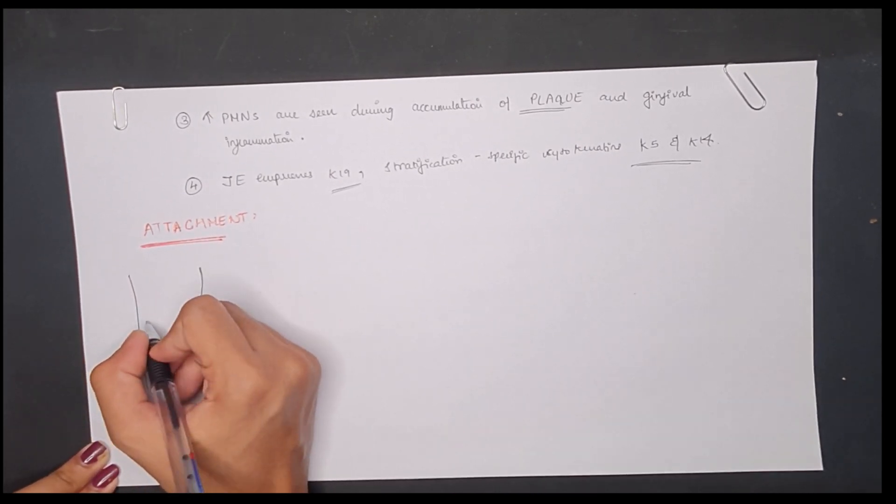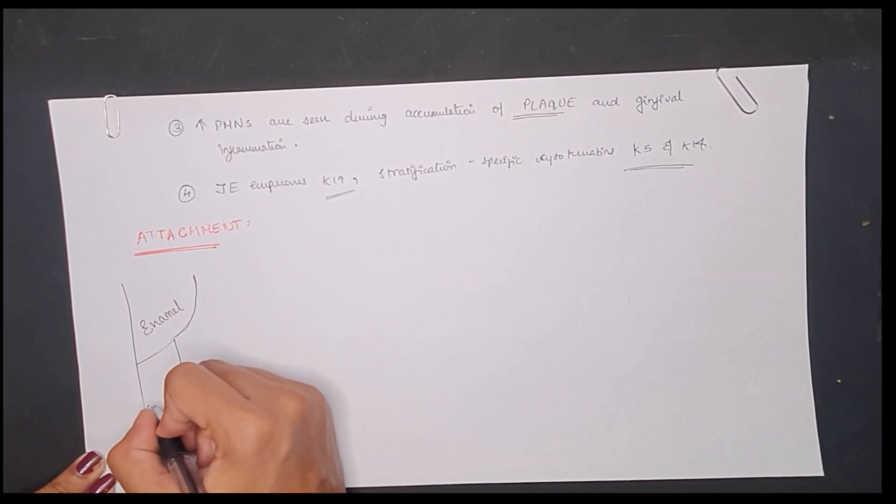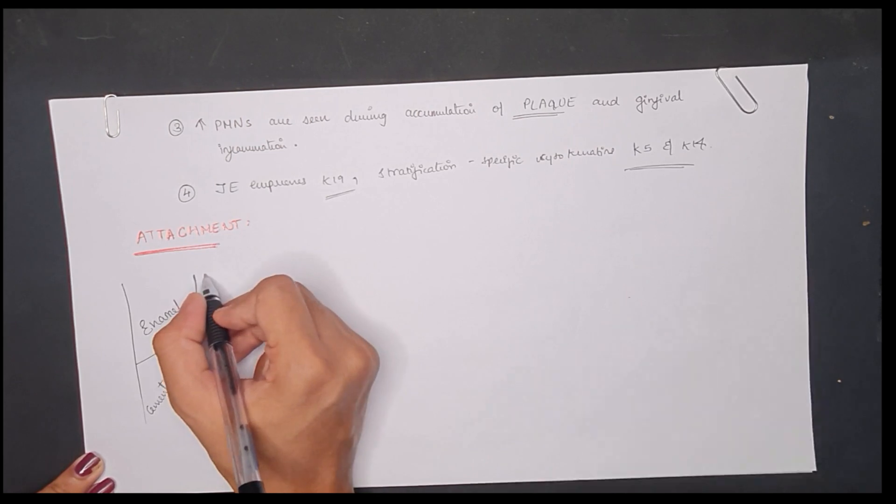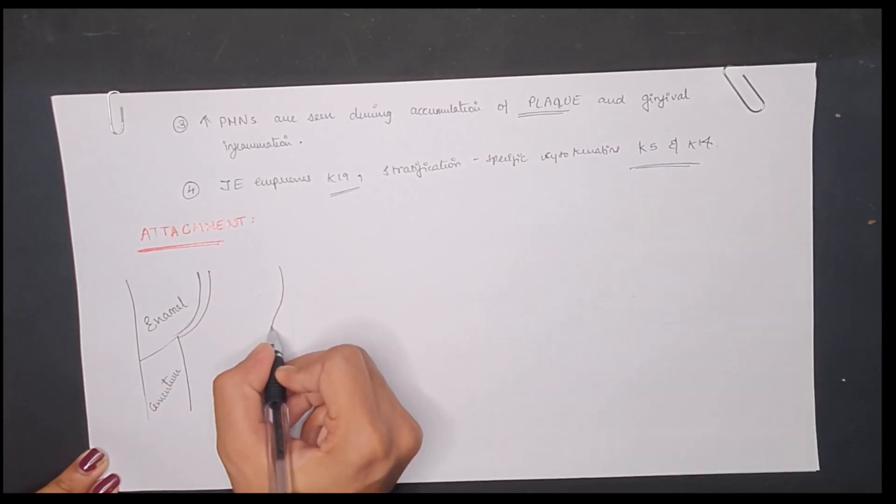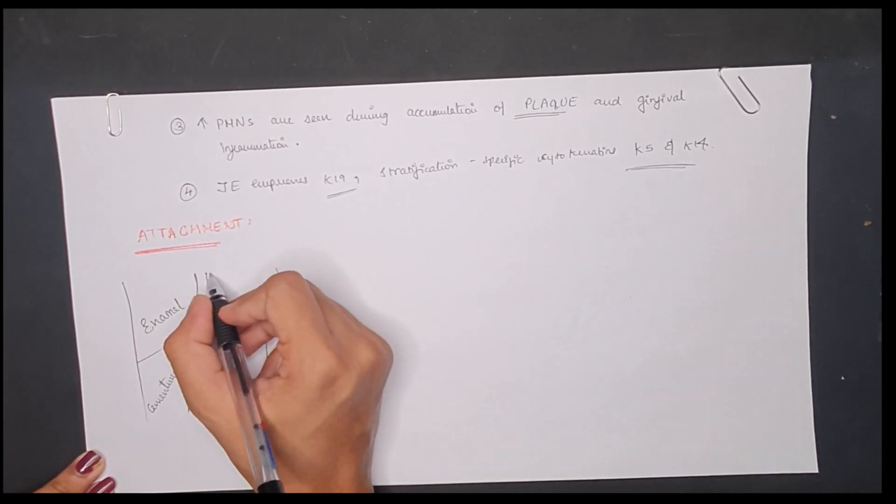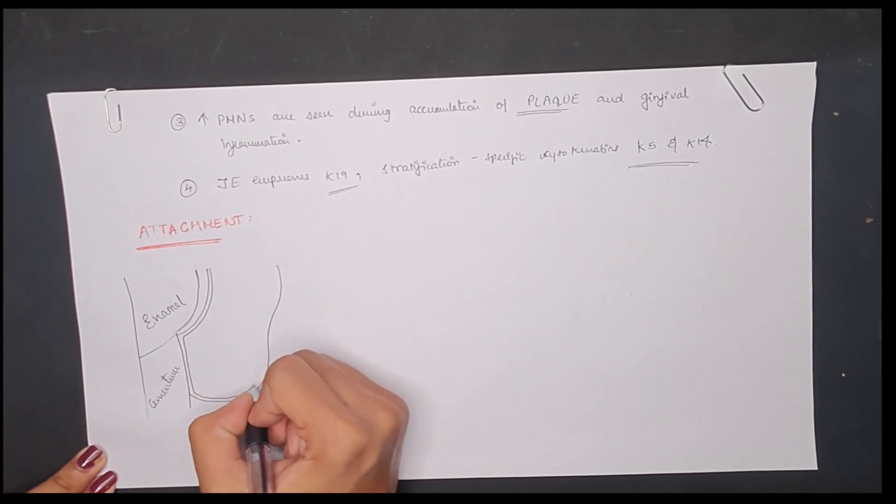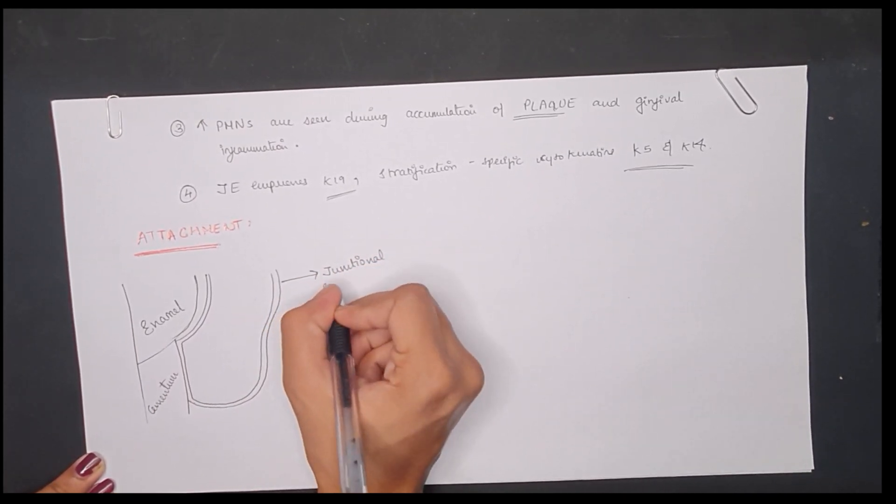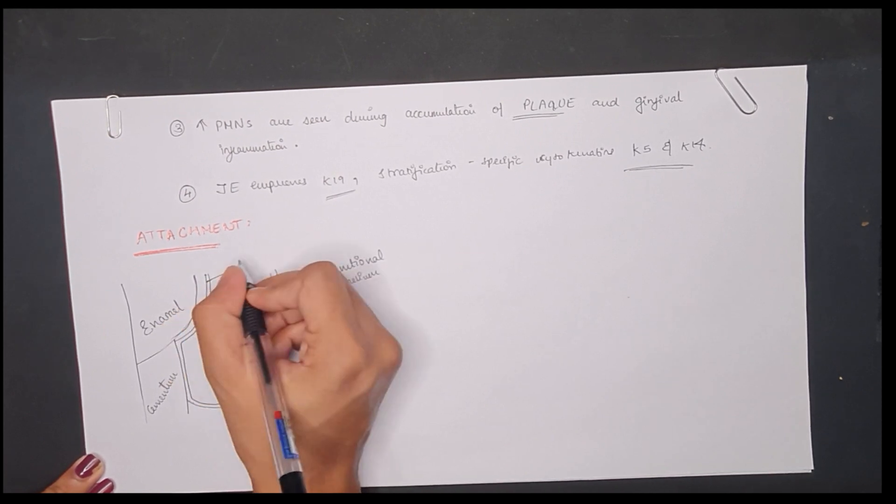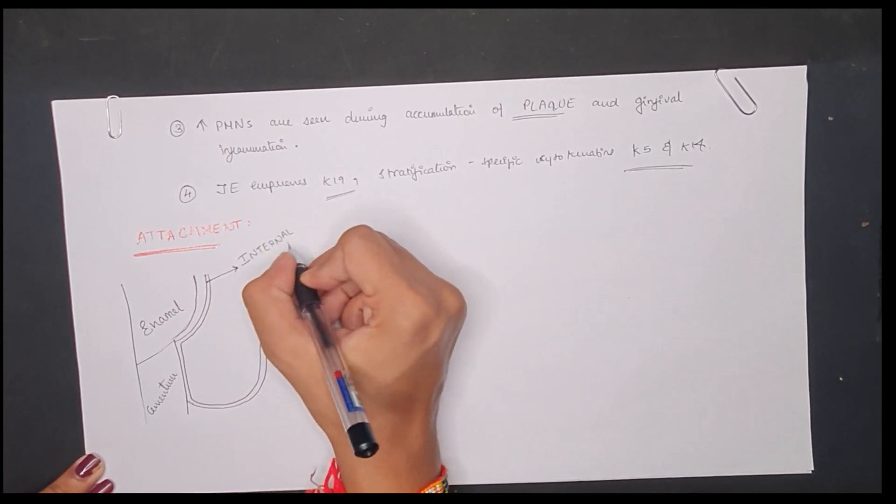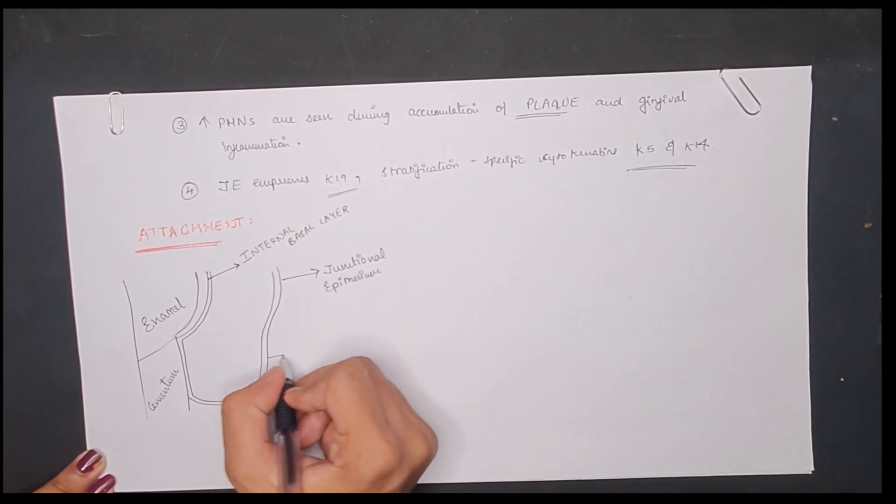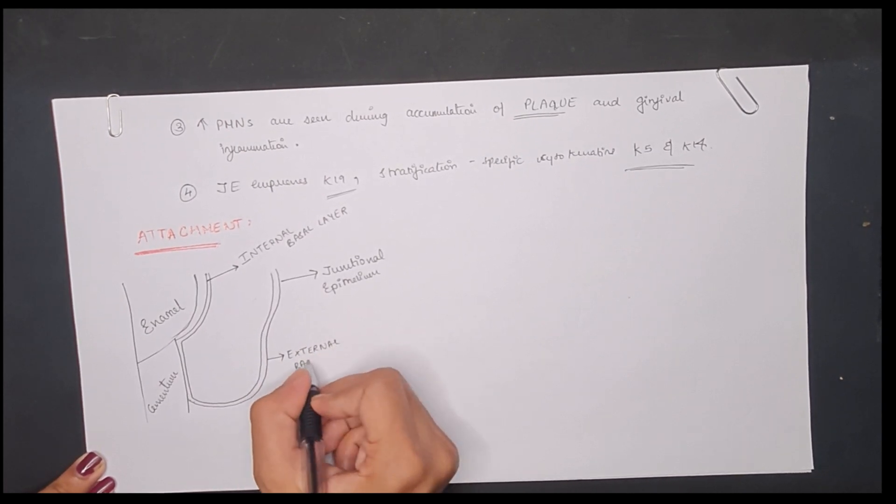So let's discuss the attachment of the junctional epithelium. Imagine there is enamel, cementum, and the junctional epithelium is attached to it like a collar-like fashion. If you see, this is the basal layer which we are drawing. This is the junctional epithelium with a collar part. This is the internal basal lamina and this is the external basal lamina.